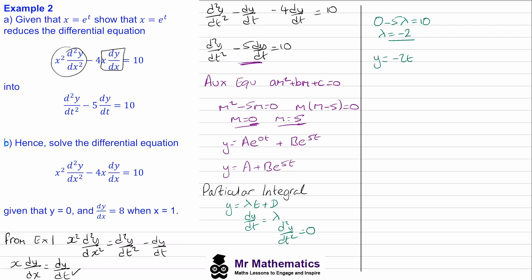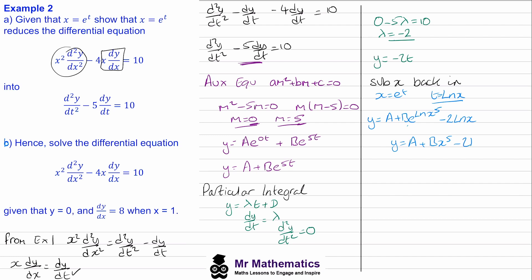Now we need to write t back in terms of x. Since x equals e^t, taking the natural log of both sides gives t equals ln(x). So our general solution is y equals A plus B·e^(5·ln x) minus 2·ln(x). Using the power rule, e^(5·ln x) simplifies to x⁵. So y equals A plus B·x⁵ minus 2·ln(x).